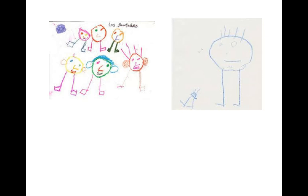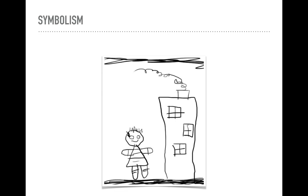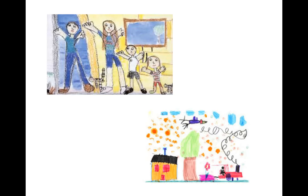Stage three is known as the symbolic stage. This stage usually occurs in ages five to six years old. Children have clearly assigned shapes to objects that they are trying to communicate. They have often developed a defined order to their drawings, with a clear separation between the sky and the ground.